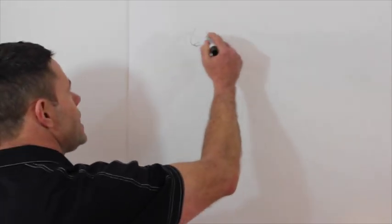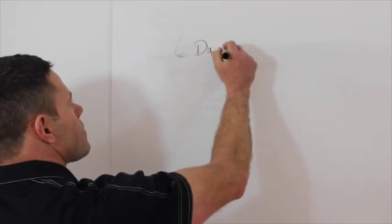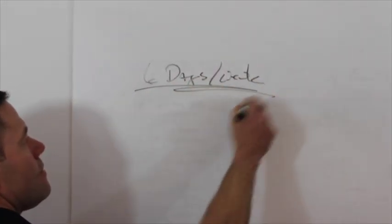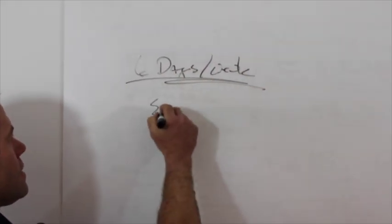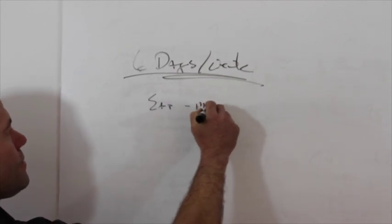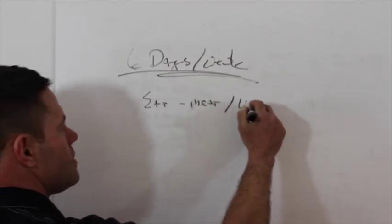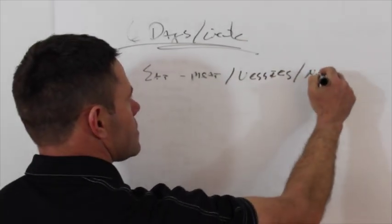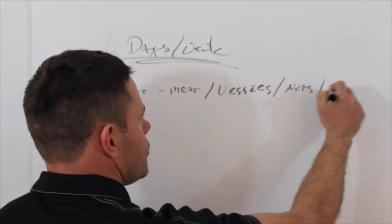Six days a week, eat meat, veggies, nuts, and a little fruit.